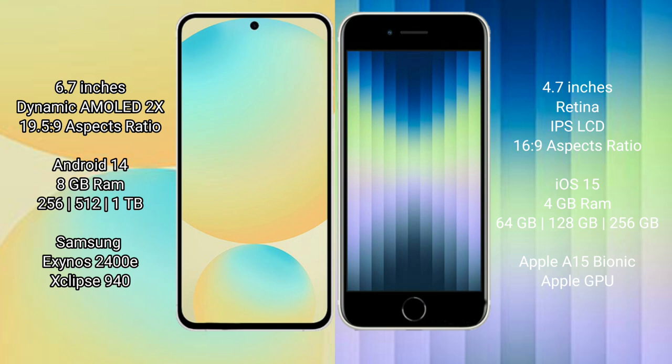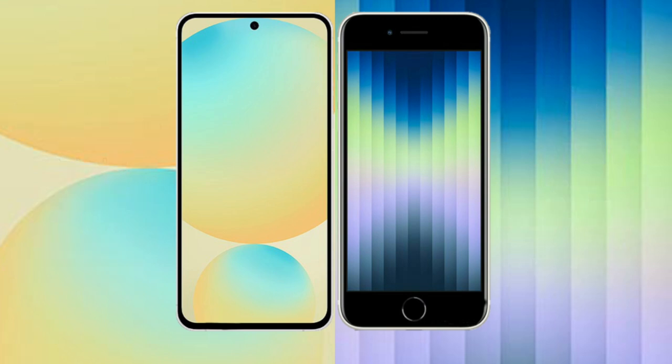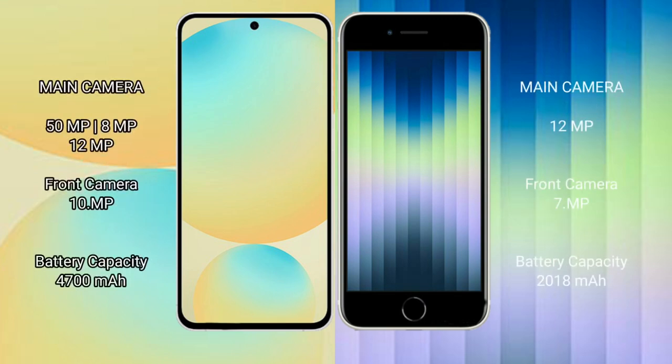The iPhone SE comes with 4GB RAM and 64GB, 128GB, or 256GB internal storage, powered by the Apple A15 Bionic processor with Apple's integrated GPU. The Samsung Galaxy S24 FE features a rear triple camera setup: 50MP main, 8MP ultrawide, and 12MP telephoto, with a 10MP front camera.